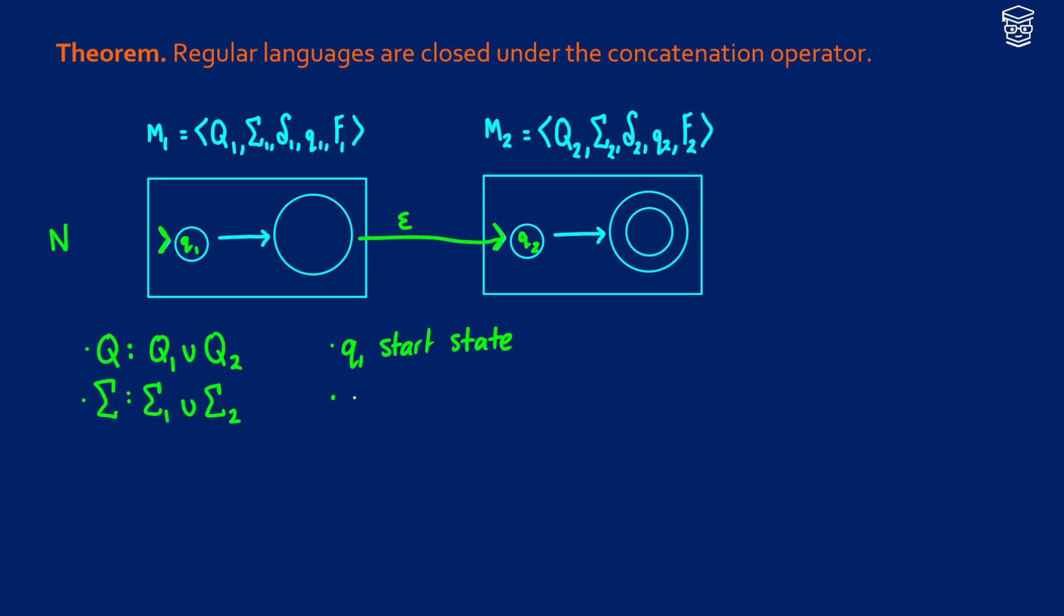And finally, our set of accept states is going to be F2. So everything that, so our F is going to be F2. Everything that was an accept state in M2 is going to be an accept state in our original machine.